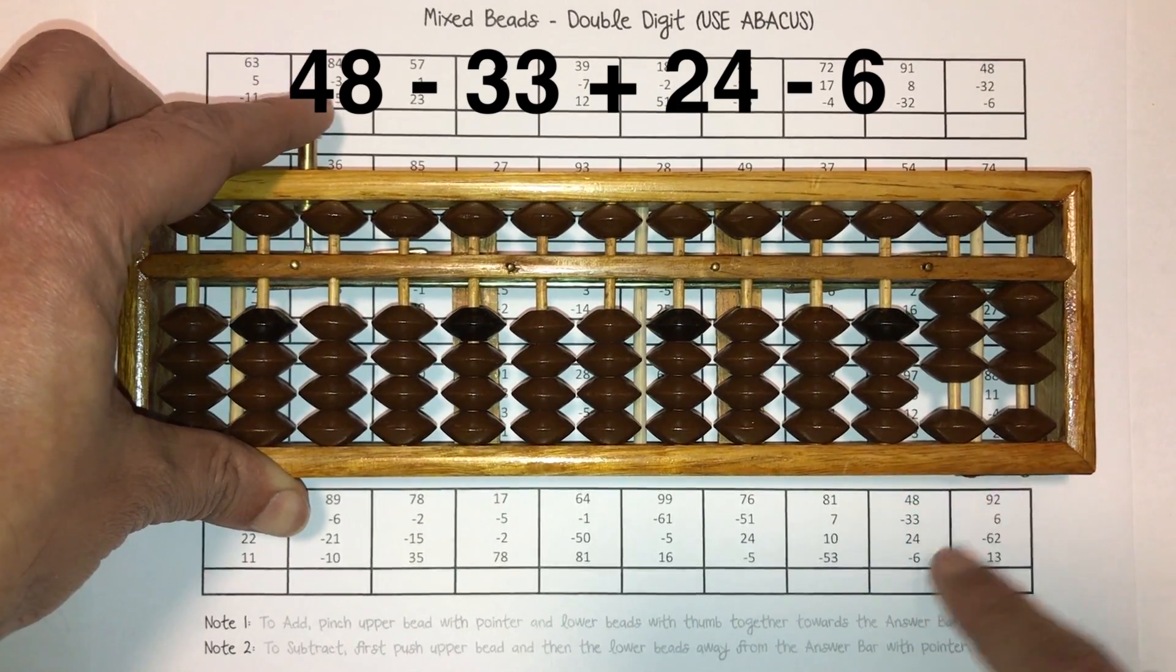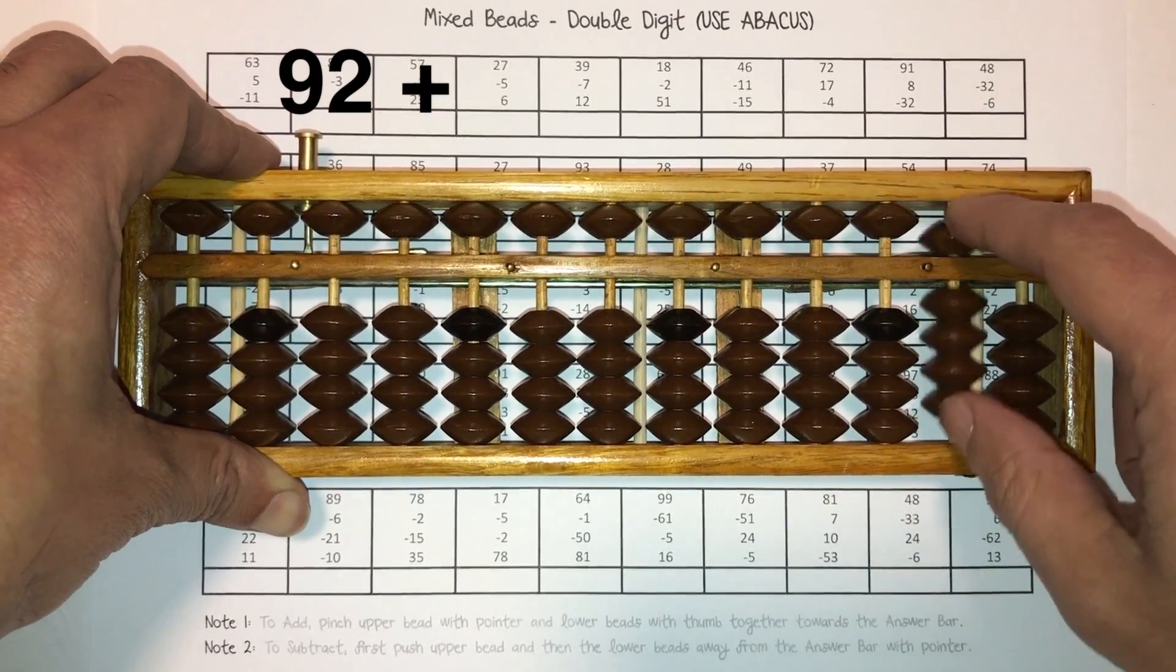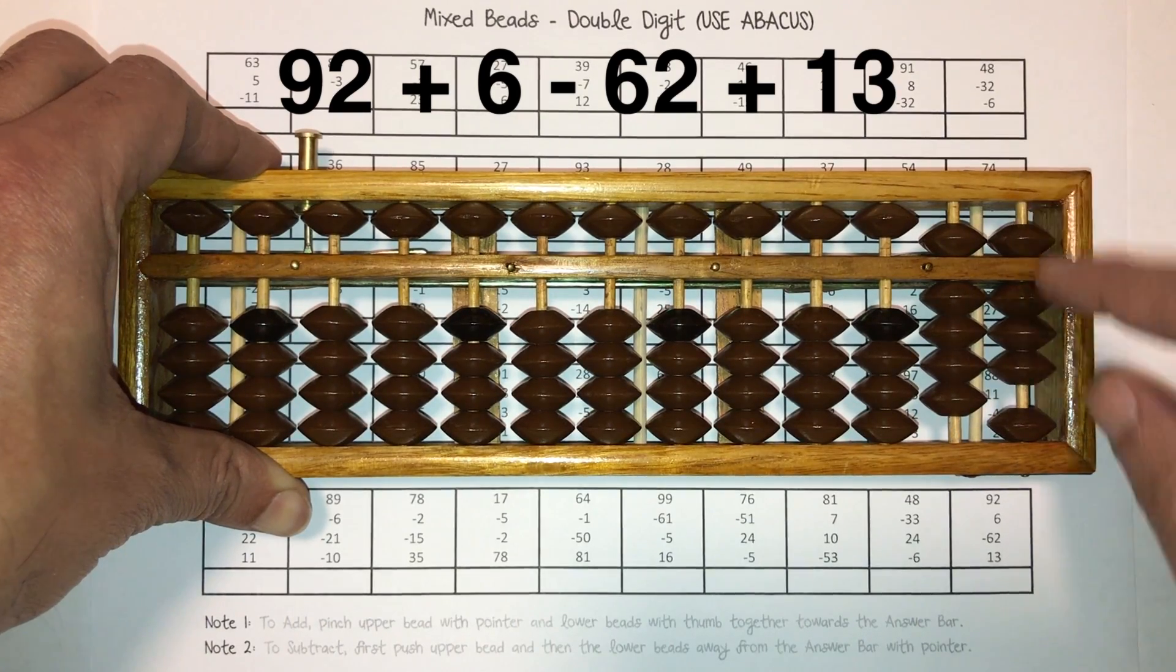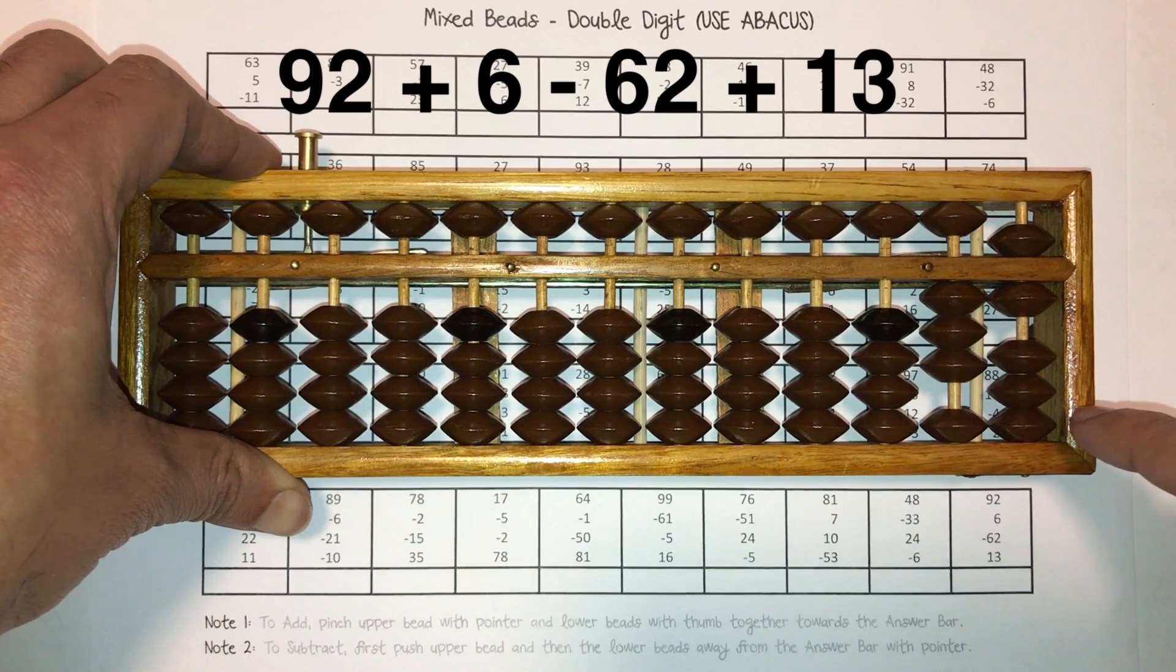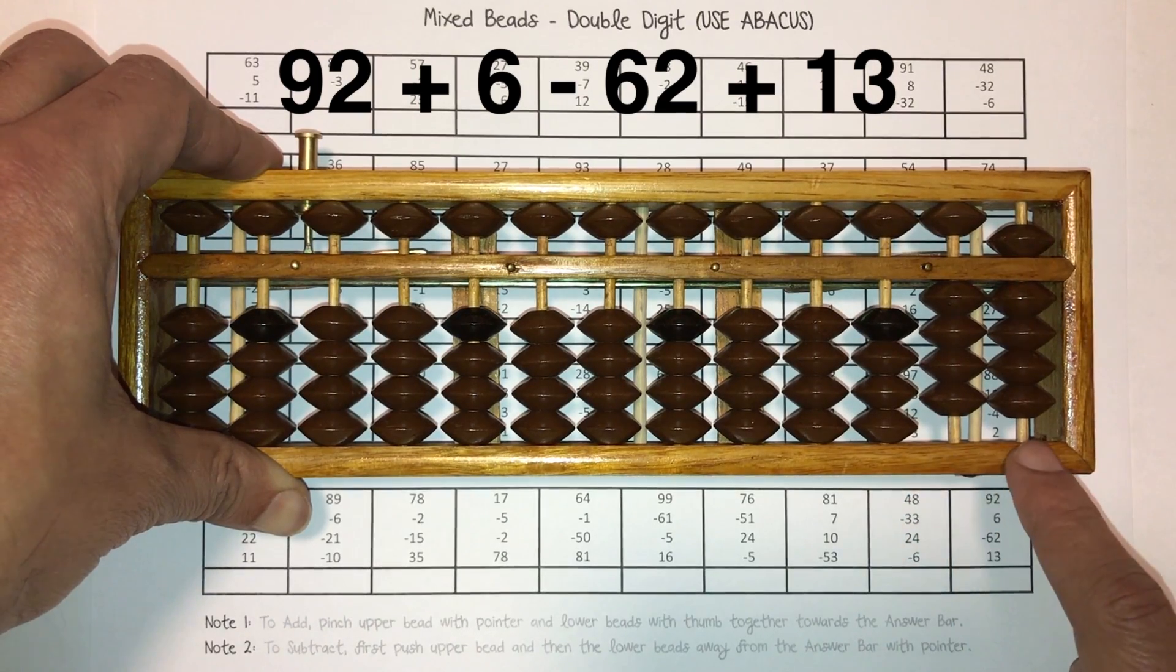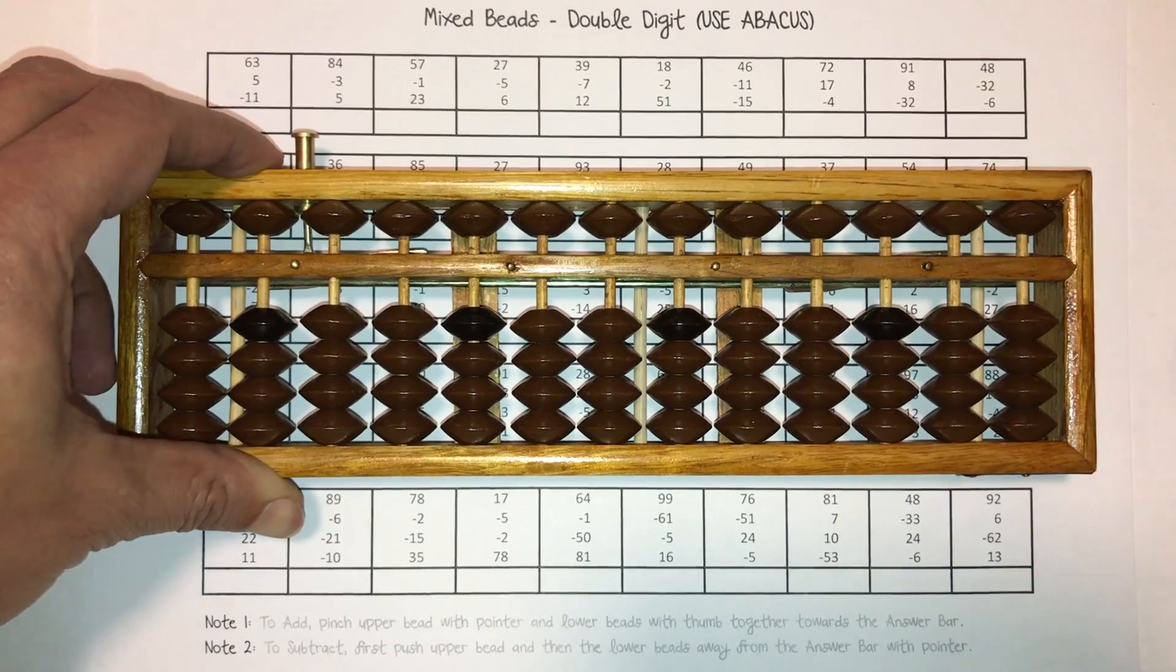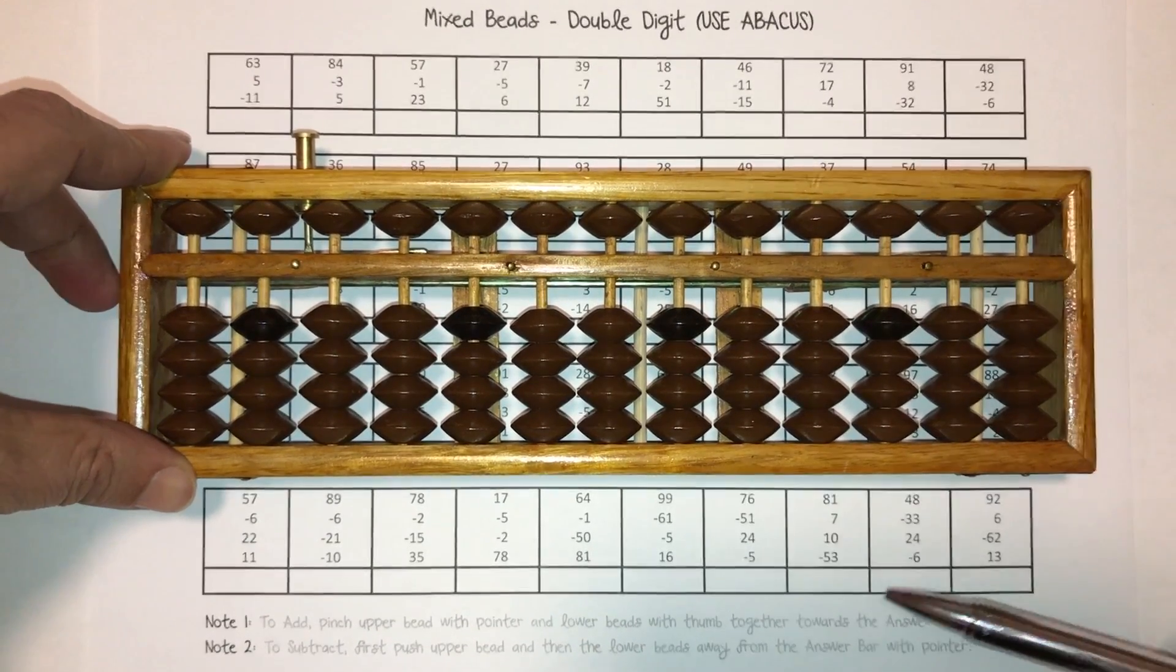Let's do this one. 92 plus six, pinch the six together, minus 60. 49. 49 goes right there. Easy enough.